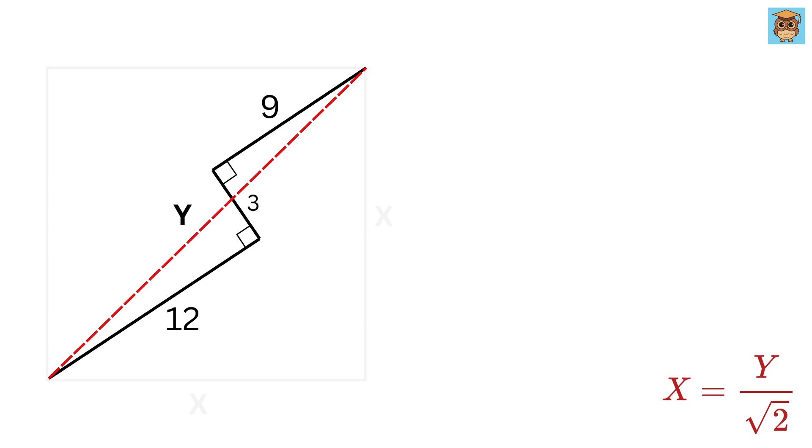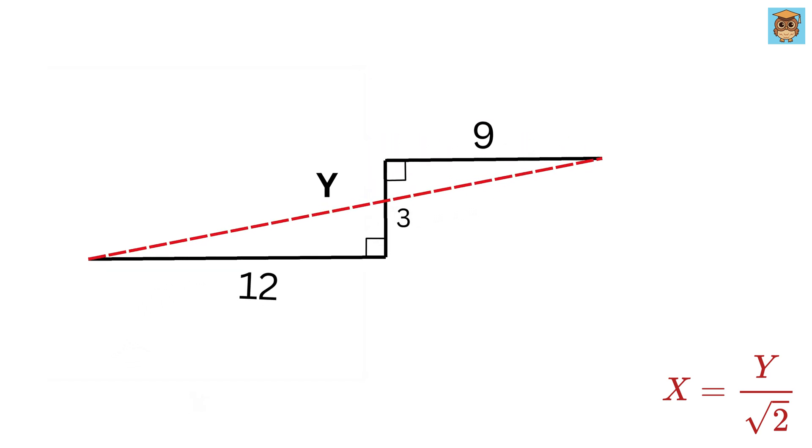Take all three of these lines along with the diagonal and then rotate it like this to make them horizontal. Now move this side which is of length 9 units down like this.